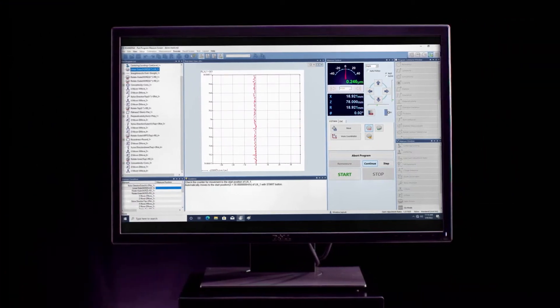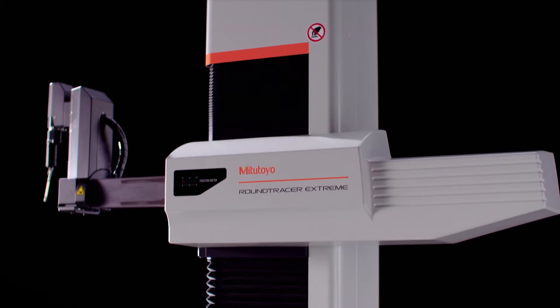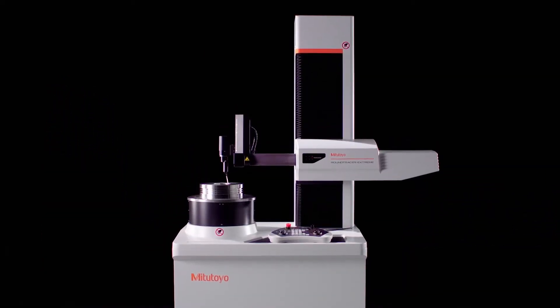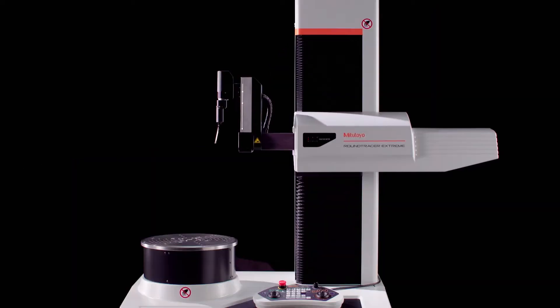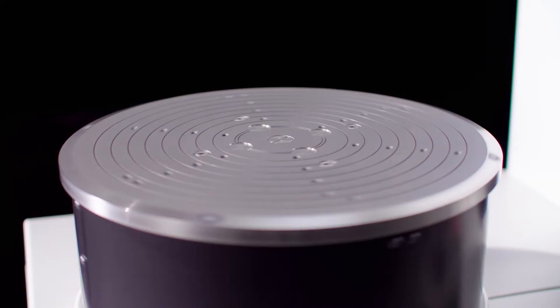Measurements of outside diameters and small holes are efficiently measured. The RTX Round Tracer Extreme features best-in-class positioning speeds with a maximum drive speed of 100 millimeters per second in both the column Z axis and X axis and 30 RPM in the rotary axis.